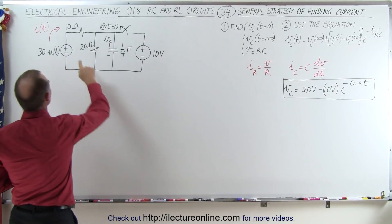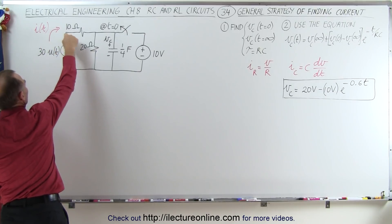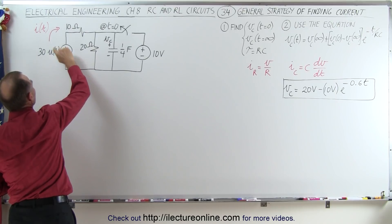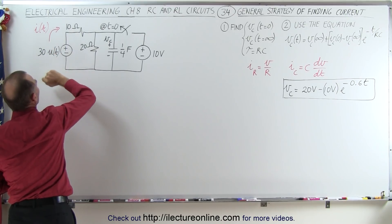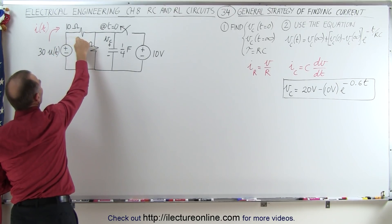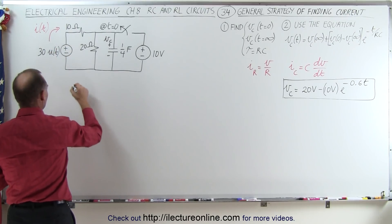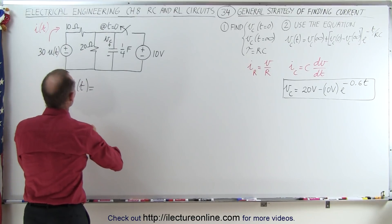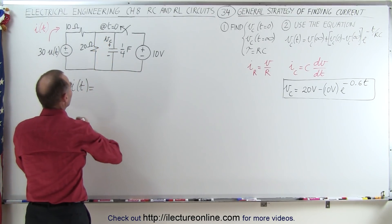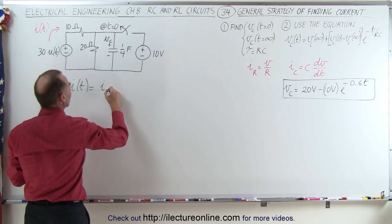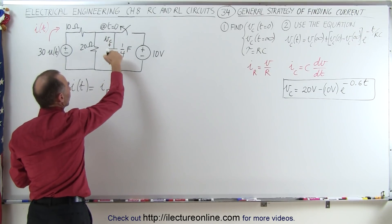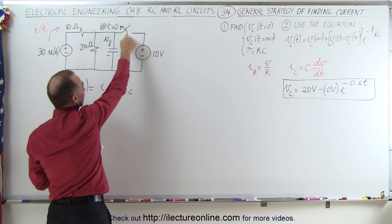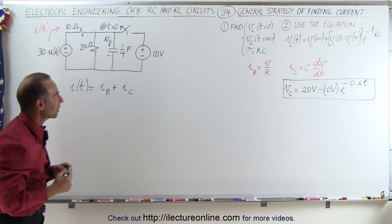We need to define the current in the circuit. We can see that the current through the circuit — through the 30-volt source and through the 10-ohm resistor — let's call it i(t). So i as a function of time is going to be equal to the sum of the current through the 20-ohm resistor plus the current through the capacitor. Of course there's no current through the switch branch because the switch is open after time equals zero.